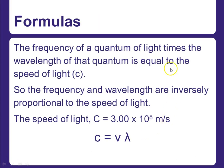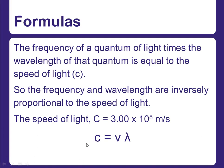The formulas we use — there are two, which we'll spend more time on later this week. The frequency of a quantum of light times its wavelength equals the speed of light, represented by the lowercase letter c. Frequency and wavelength are inversely proportional, and the speed of light in a vacuum is 3 times 10 to the eighth meters per second. The equation, which you'll see in your lab handout, is c equals frequency times wavelength.